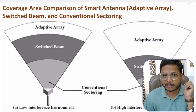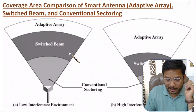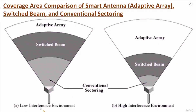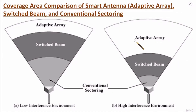Now I'll discuss coverage area comparison, which is quite interesting. In a low interference environment, adaptive array — which means smart antenna — provides higher area coverage compared to switched beam system, while conventional sectoring provides minimum area coverage. In a high interference environment, smart antenna still provides higher coverage, and compared to smart antenna, switched beam system has lower coverage. So in interference environments, smart antenna gives the best performance.